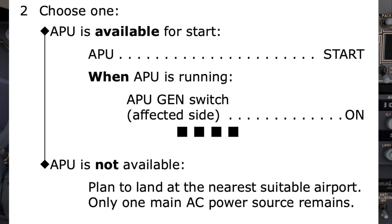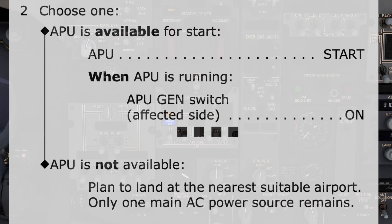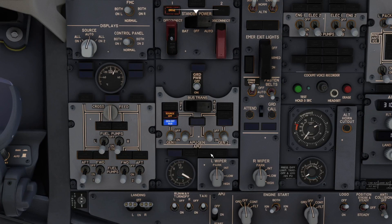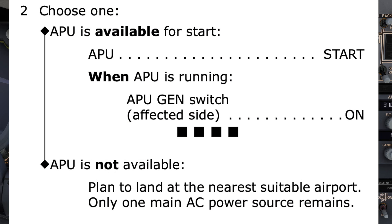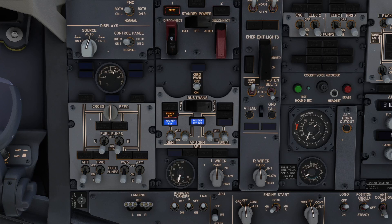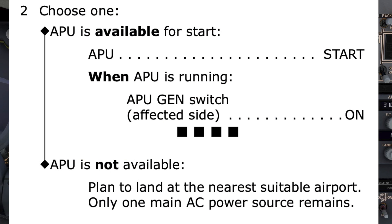Step 2 is conditional: is the APU available for start, or not? Our APU is available, so we select the first path, which directs us to start the APU. The purpose in starting the APU is to use it as an additional power source. The checklist then states in bold letters — when the APU is running — to switch on the APU generator switch on the affected side. The four black boxes within this path indicate the checklist has been completed.